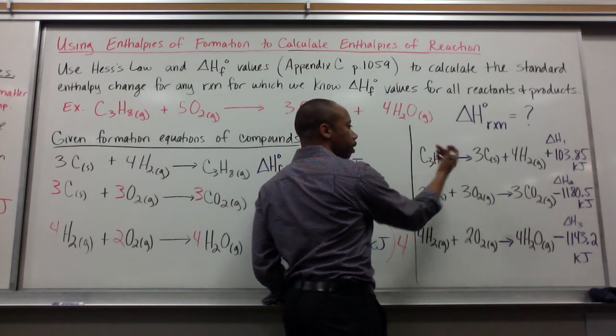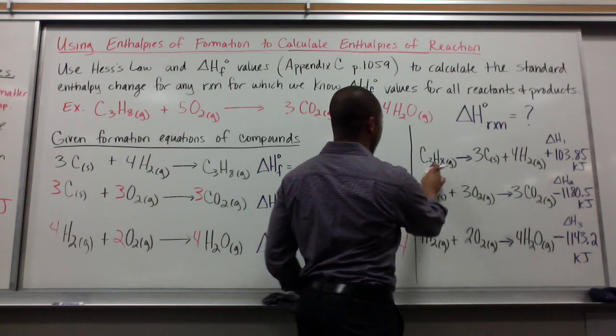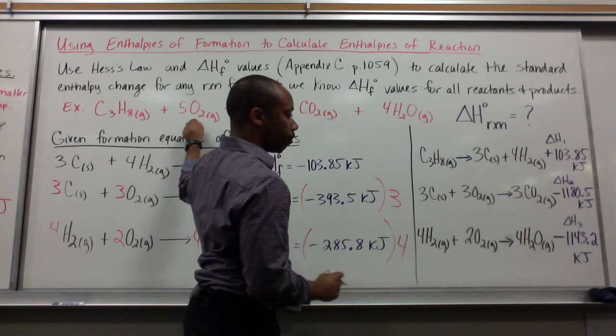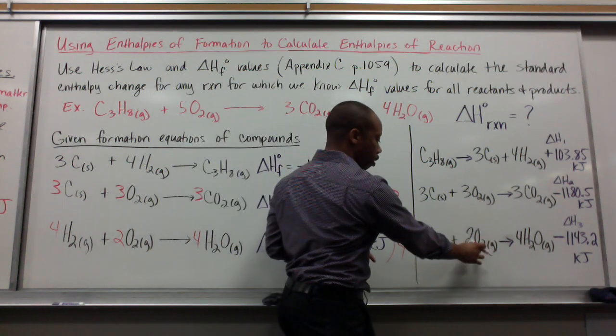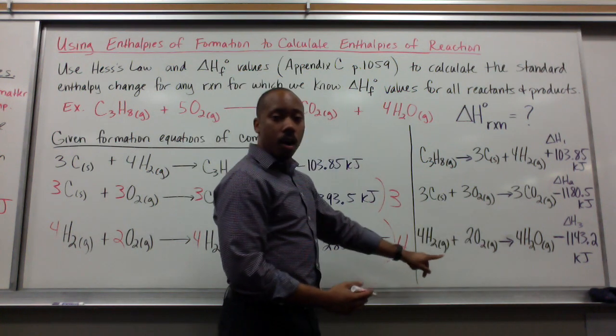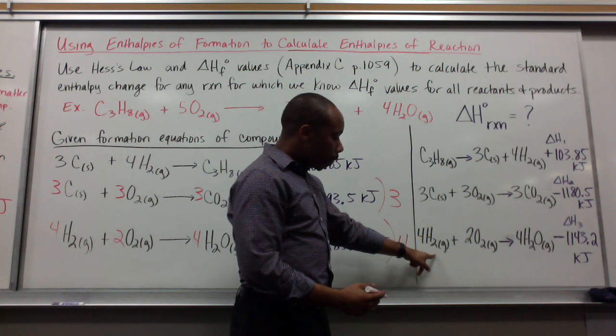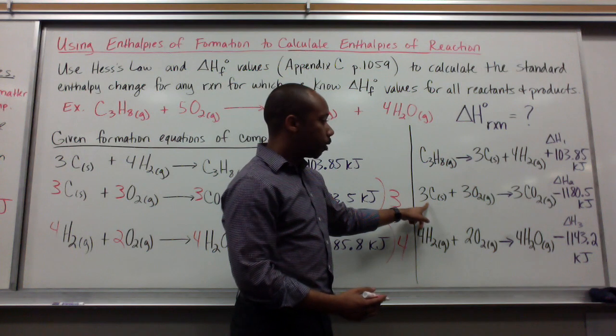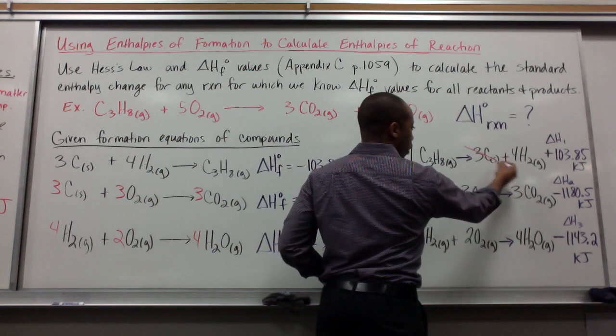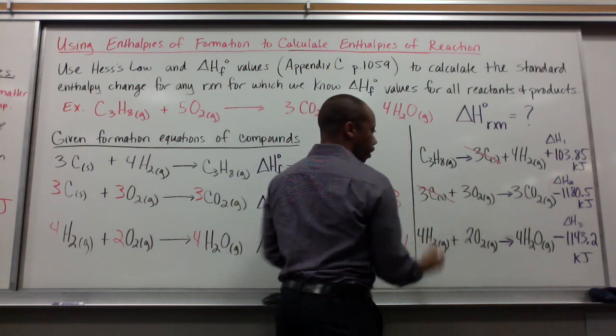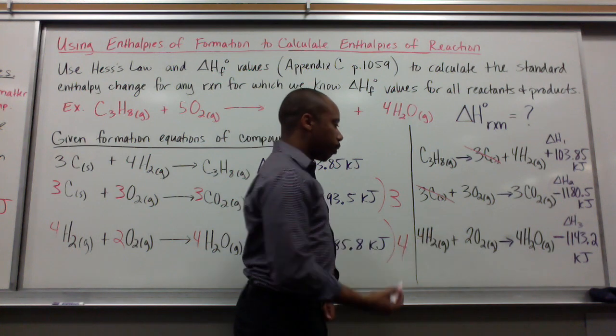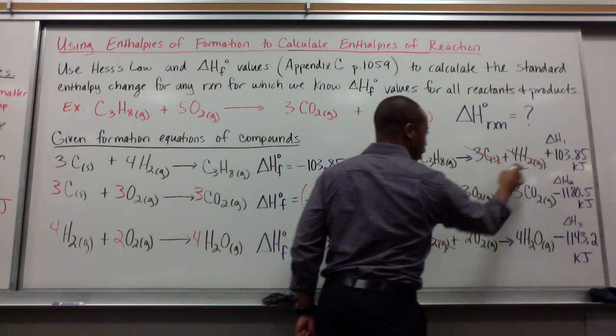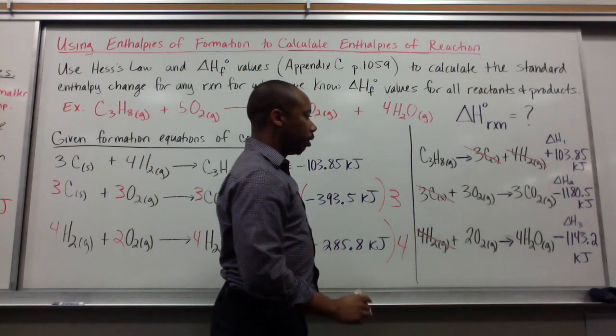So C₃H₈. That's great. We need that on our reactant side. We also need O₂ on our reactant side. Here and here. What we don't need on our reactant side are our moles of hydrogen gas. And moles of solid carbon. So, the three moles of solid carbon on this side and the three moles of solid carbon on that side cancel. As well as the four moles of H₂ here and the four moles of H₂ here cancel.